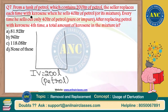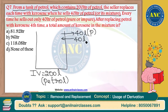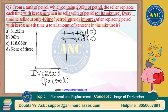The seller replaces each time with kerosene when he sells 40 liters of petrol or its mixture - that means I will take out 40 liters of petrol and replace it with 40 liters of kerosene. Every time he sells out only 40 liters of petrol, pure or impure. This 40 liters will not change; every cycle it is the same number.